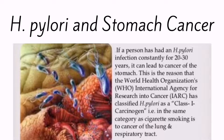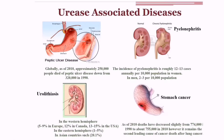What is the connection between H. pylori and stomach cancer? The WHO classified H. pylori as a class 1 carcinogen. These are the urease-associated diseases: pyelonephritis, stomach cancer, urolithiasis, and peptic ulcer diseases.